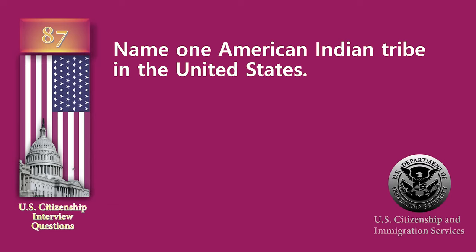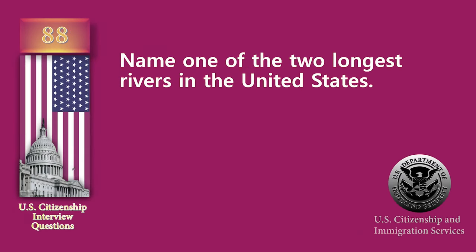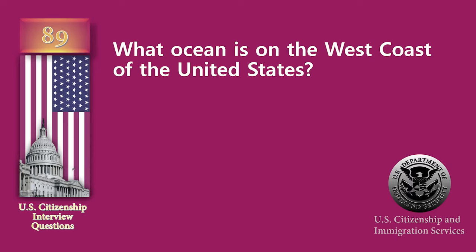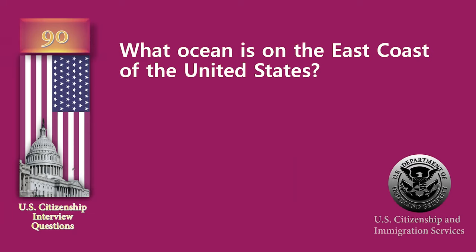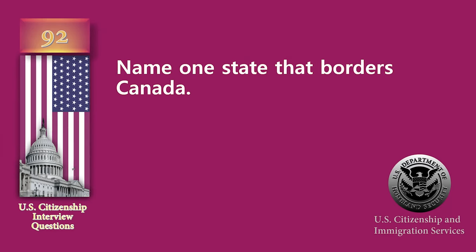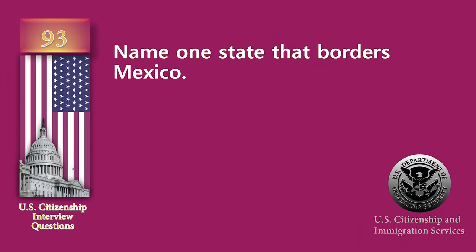Name one American Indian tribe in the United States. Cherokee. Name one of the two longest rivers in the United States. Missouri River. What ocean is on the west coast of the United States? Pacific Ocean. What ocean is on the east coast of the United States? Atlantic Ocean. Name one U.S. territory. Puerto Rico. Name one state that borders Canada. Maine. Name one state that borders Mexico. California.